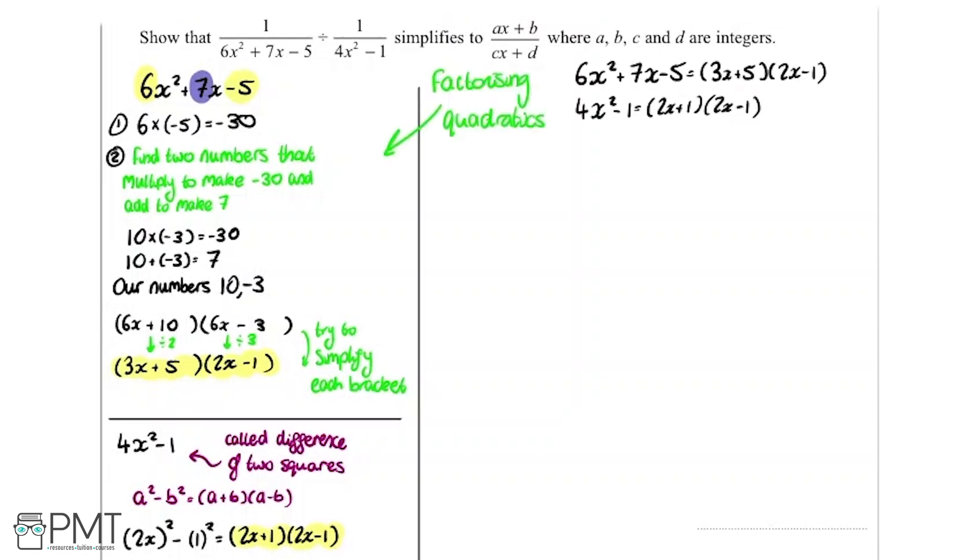So now we've factorized and we've got that here, we can go about answering the question. So we're going to write out the question replacing the quadratic with the factorized form. So this is what we get here. This is what we're now trying to work out.